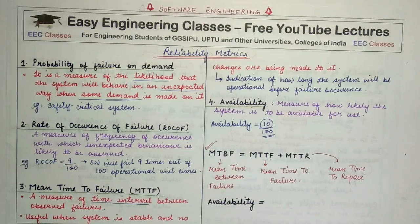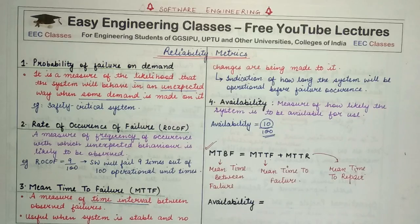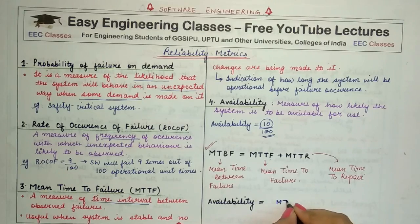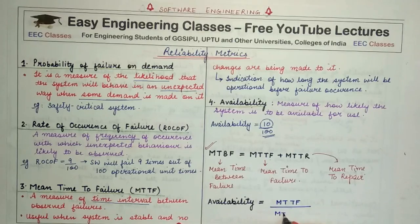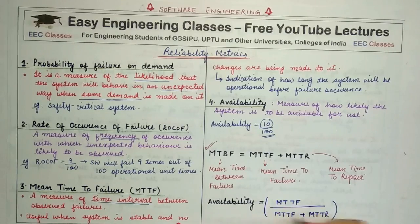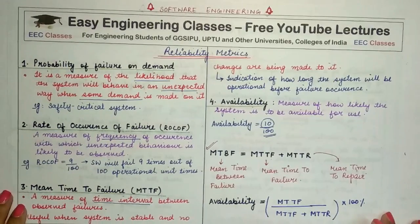The last formula for this lecture is for availability, calculated based on mean time to failure and mean time to repair. Availability equals mean time to failure divided by the quantity mean time to failure plus mean time to repair, multiplied by 100%. This is the formula for availability.